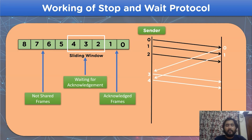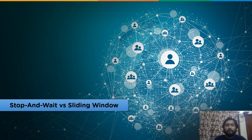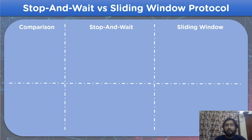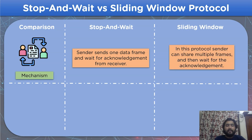Now let's move on to the next heading: the difference between stop-and-wait protocol and sliding window protocol. The first comparison is on the basis of working mechanism. The stop-and-wait protocol is designed to send a single data frame at a time and wait for the receiver to send acknowledgement before sharing the next frame. As for the sliding window protocol, the sender can send multiple frames simultaneously and then wait for the corresponding acknowledgement from the receiver end.